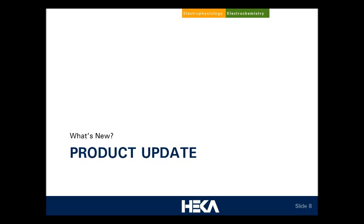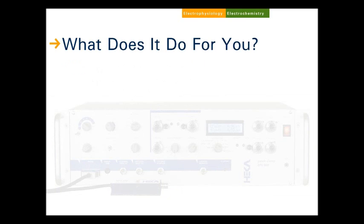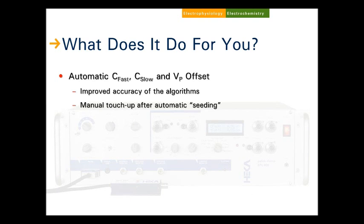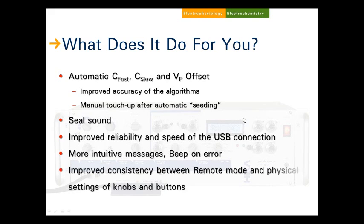Now I would like to discuss the product updates. First, the EPC-800, our dual-mode patch clamp amplifier, had a firmware update released in April this year. We have made improvements to the automatic C-fast, C-slow, and VP offset algorithms, and also to the auto functions with manual touch-up. The seal sound feature built into the EPC-800 has been enabled with this firmware release. We have improved the reliability and speed of the USB connection, added more messages to the LCD display and beep on error, and improved consistency between remote mode and physical settings of knobs and buttons.